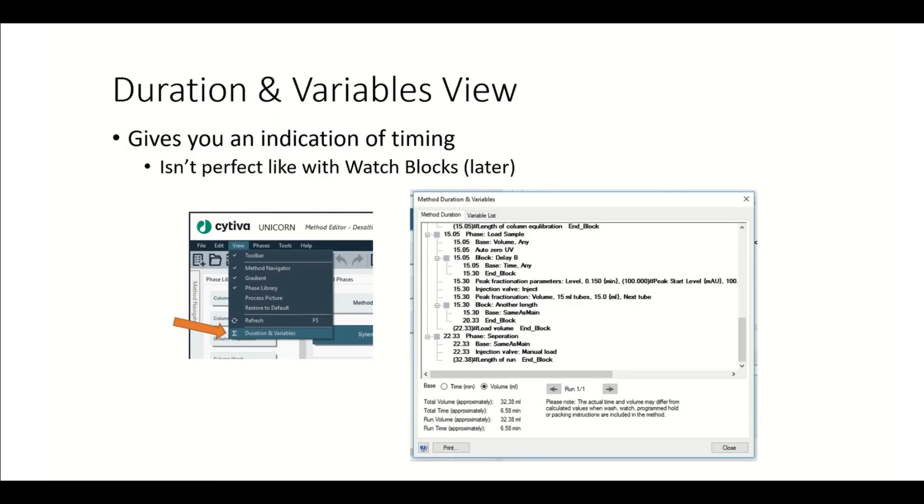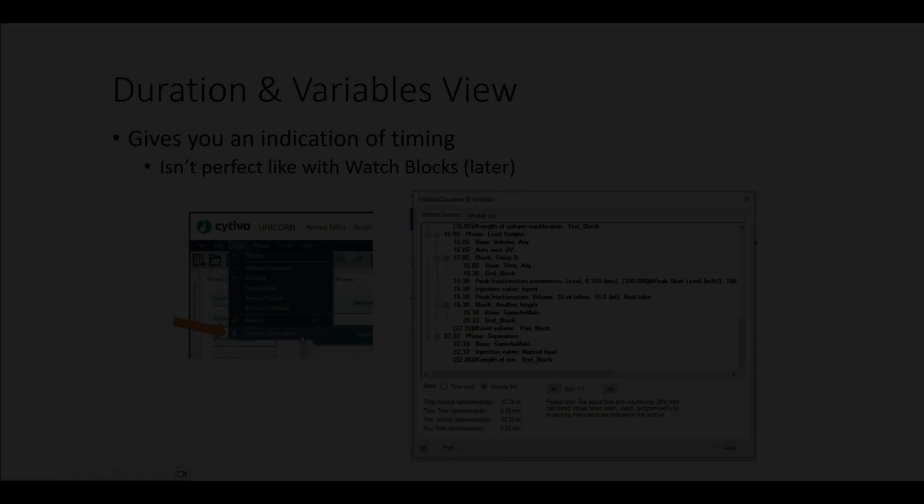I think the authors of the unicorn program have recognized that this is basically a problem and they've given us a way to be able to look at that timing, though it isn't perfect. So that imperfection is described right here in this box. In order to see the duration and variables view, we're just going to go to view and then duration and variables. Let's do that in unicorn really fast.